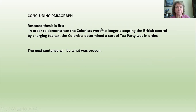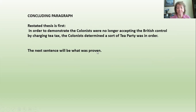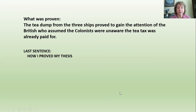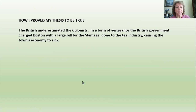So we put the restated thesis statement in the concluding paragraph first. The next sentence out of three will be what was proven. What did we prove? We proved that the tea dump from the three ships proved to gain the attention of the British, who assumed the colonists were unaware that the tea tax was already paid for. The last thing is to show how I proved that — how I proved it to be true was that the British underestimated the colonists. In a form of vengeance, the British government charged Boston with a large bill for damage done to the tea industry, causing the town's economy to sink.